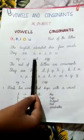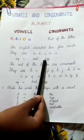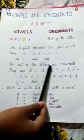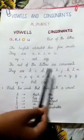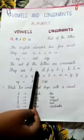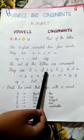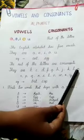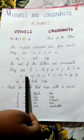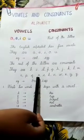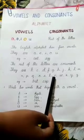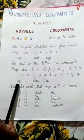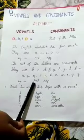Example: A for Ant, E for Egg. The rest of the letters are consonants. They are B, C, D, F, G, H, J, K, L, M, N, P, Q, R, S, T, V, W, X, Y, Z. For example: Bat, Cap.